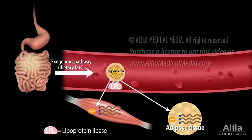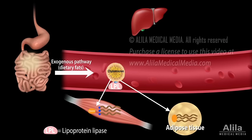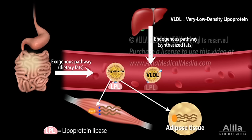Fats that are synthesized endogenously in the liver are packed into another type of lipoprotein, the VLDL, to be transported to tissues, where triglycerides are extracted in the same way. When required, fat stores in adipose tissue are mobilized for energy production by the action of hormone-sensitive lipase, which responds to hormones such as epinephrine.